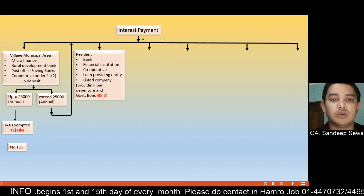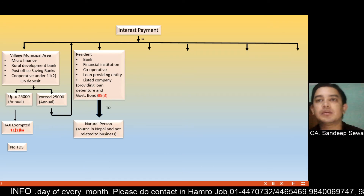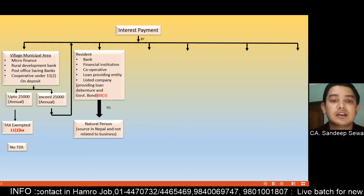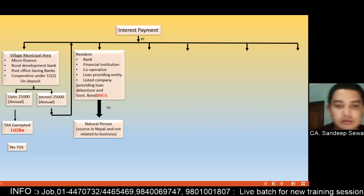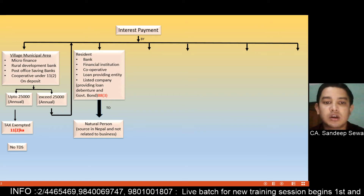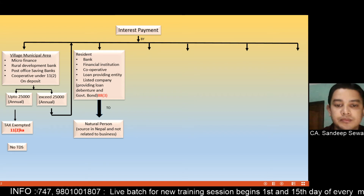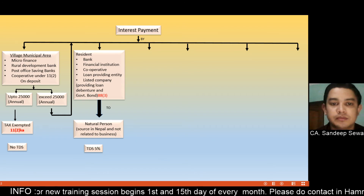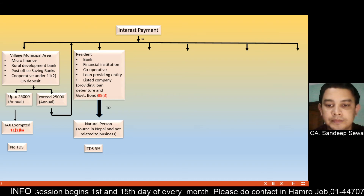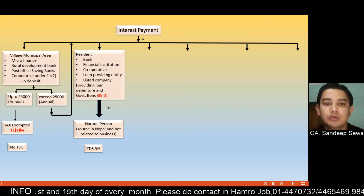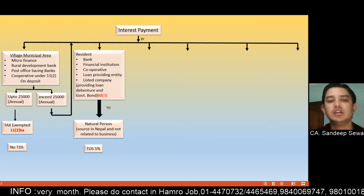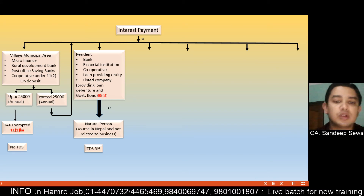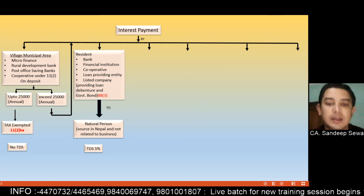Therefore, they can pay a natural person. If they want to pay a person, then they can pay a person. This bank, financial institution — the loan is due to the interest, which is the interest on the loan, debenture, and government bond. The government is going to pay interest. The interest rate is 5%. If you pay interest at 5%, this is the issue. The bank and financial institutional cooperative loan deposit — natural person interest payment. The interest payment is not related to the business.